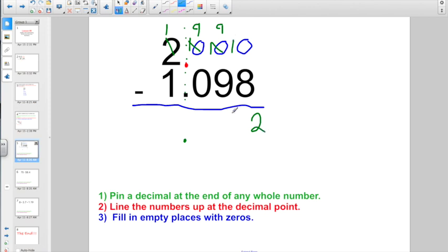9 minus 9 is 0. 9 minus 0 is 9. And 1 minus 1 is 0. So on a decimal number, you remember, we always want to start with a 0, even if there is anything there. So I have a final answer of 902 thousandths.